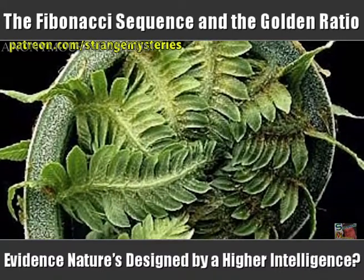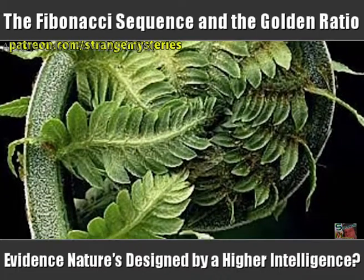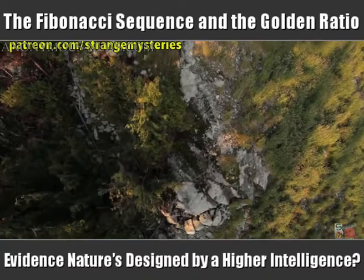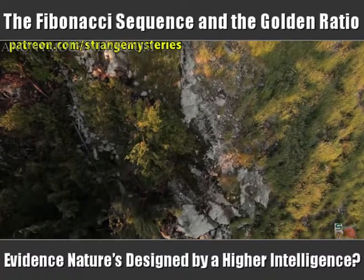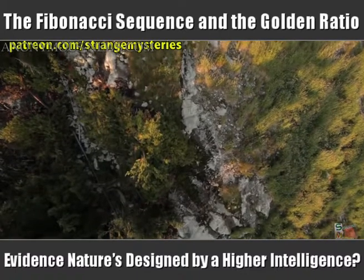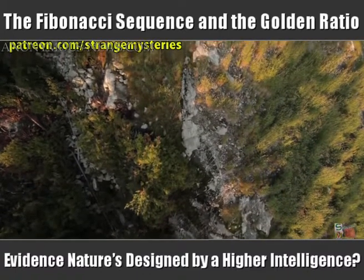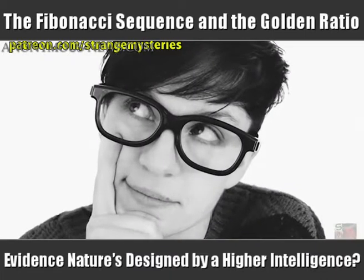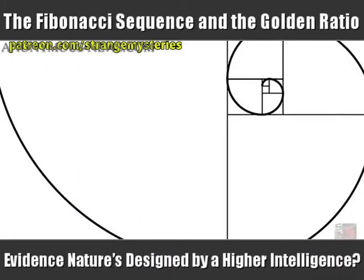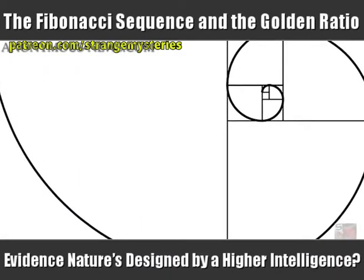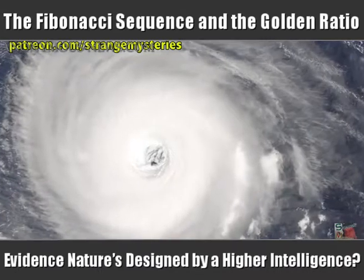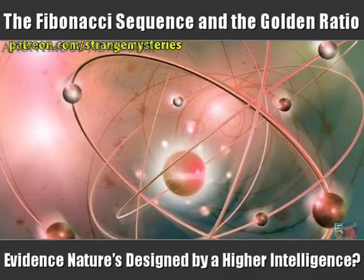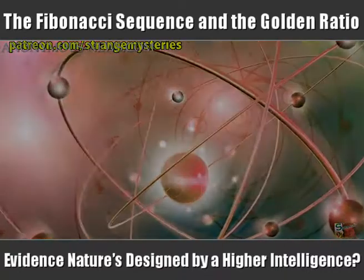So is this ratio evidence that nature has been somehow designed? Was everything on Earth created by a god or advanced extraterrestrial race to adhere to a certain number? It does look a little suspicious, especially when you also find out that the Golden Ratio applies to hurricanes, spiral galaxies, trees, and objects at the quantum level too.